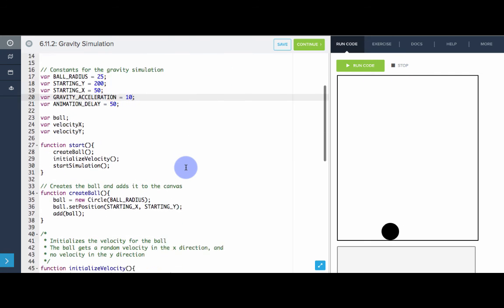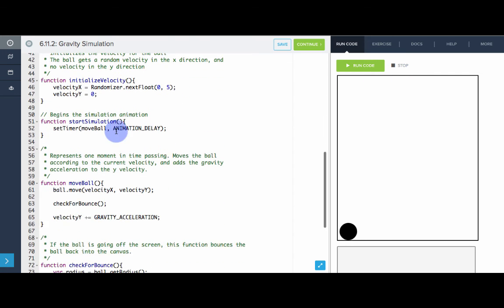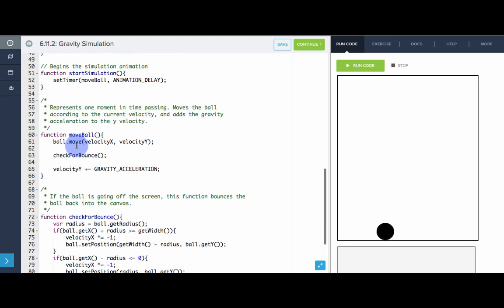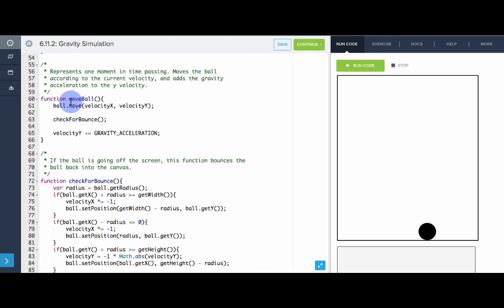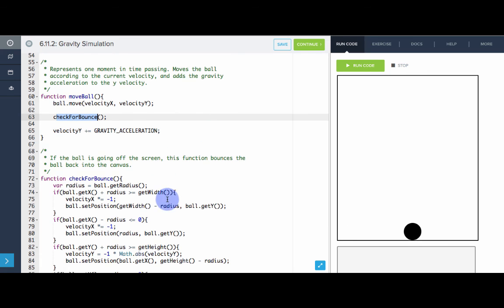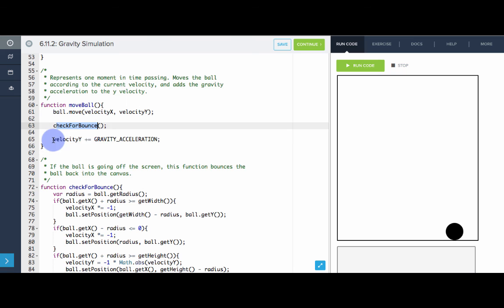So this is one example simulation. It's simulating gravity. I encourage you to go through the code and see how this is working. Really, this is the meat of it right here, move ball. Every single moment this function move ball is called. First it's moved a distance in the x direction and a distance in the y direction. We check if it's bouncing. We reverse the direction if it needs to bounce off a wall. Then we add the gravitational acceleration to the y velocity. So we're increasing the speed in the y direction because of gravity.